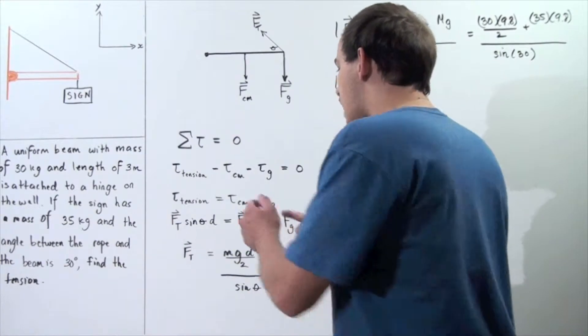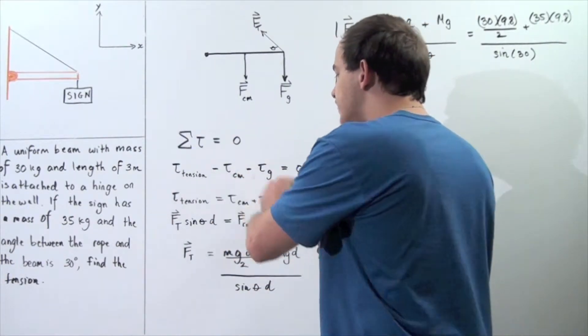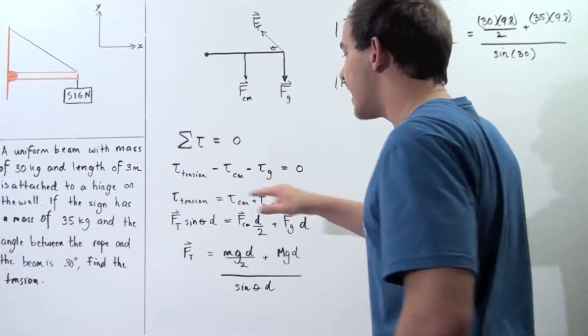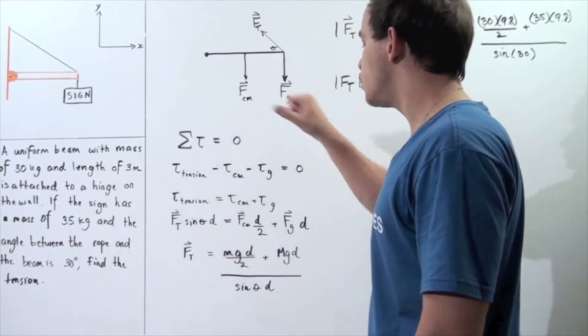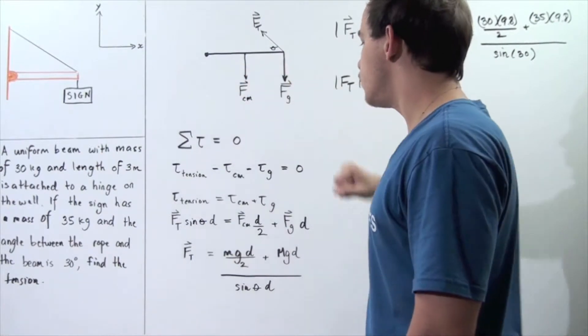Now we can rearrange our equation and bring these negative terms to the right side. And we find that the torque tension is equal to the sum of these two torques created by these two forces.